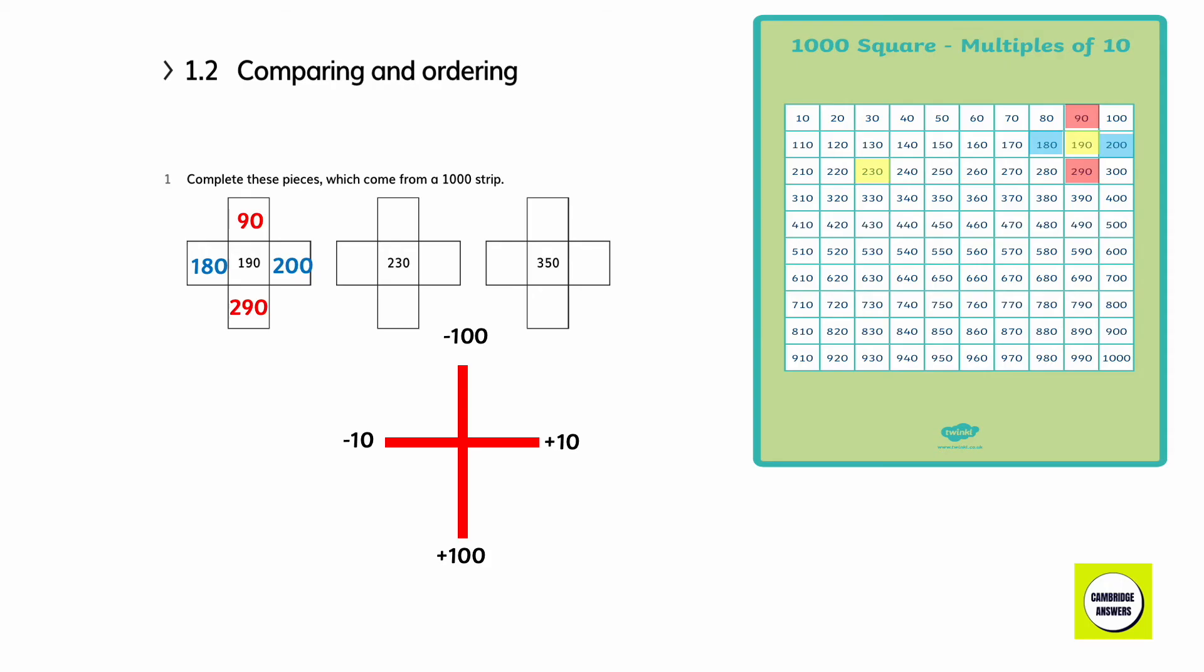Let's look at 230 now. When we subtract 100, we get 130. When we add 100, we get 330. When we subtract 10, we get 220. And when we add 10, we get 240. 130, 330, 220, 240. 350, 250, 450, 340, 360.